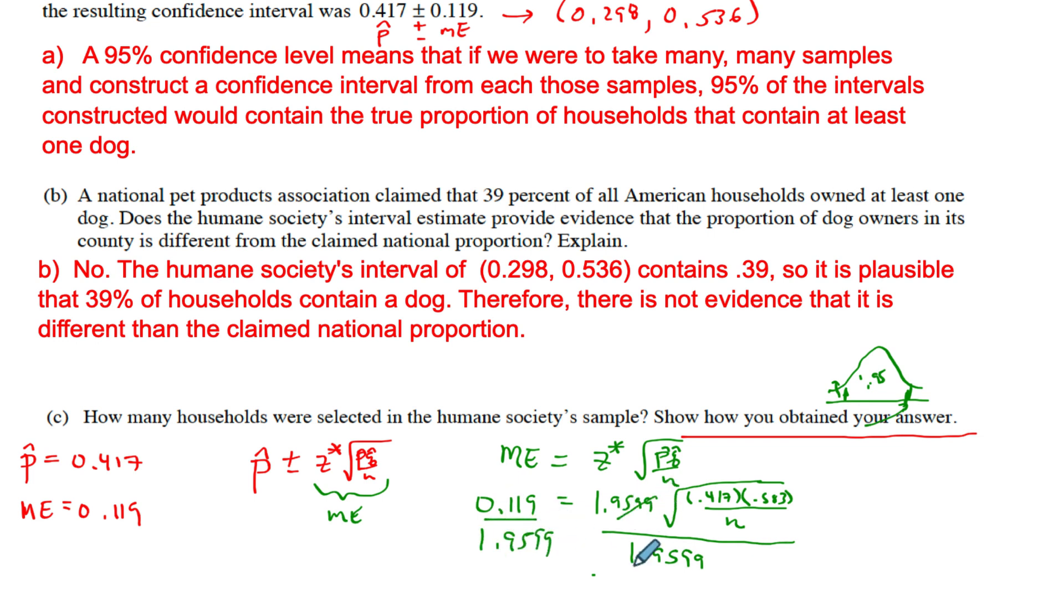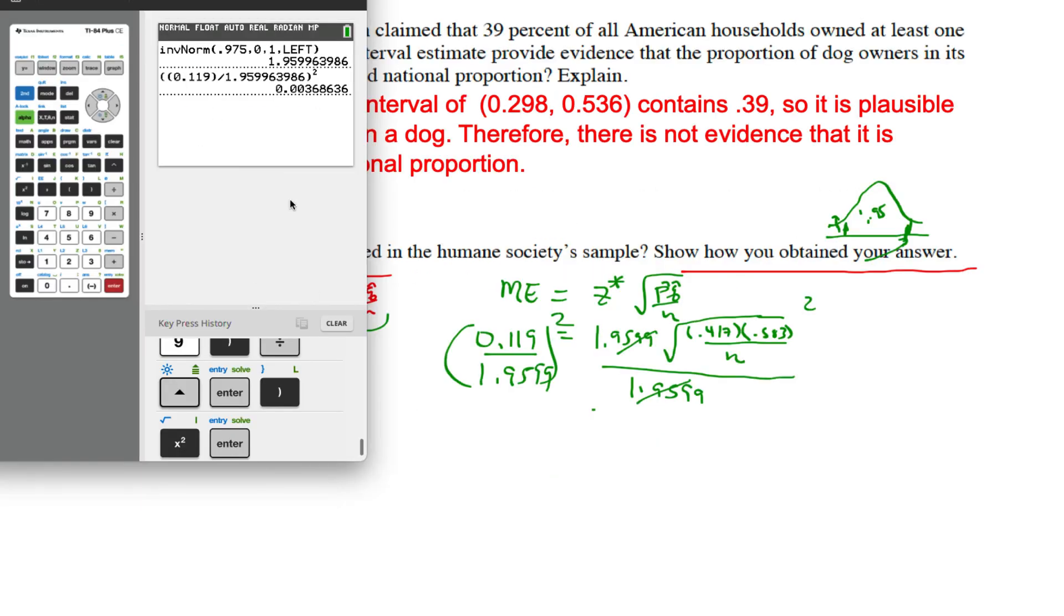In my class we made a little program that does it for us, but you still have to show this part. You have to show the numbers being plugged in because they want to see that you know what you're doing. I would divide both sides by 1.9599, then I would get rid of that square root, so I would square both sides. Let me put all that in the calculator. I put the margin of error divided by that number, and then we squared it.